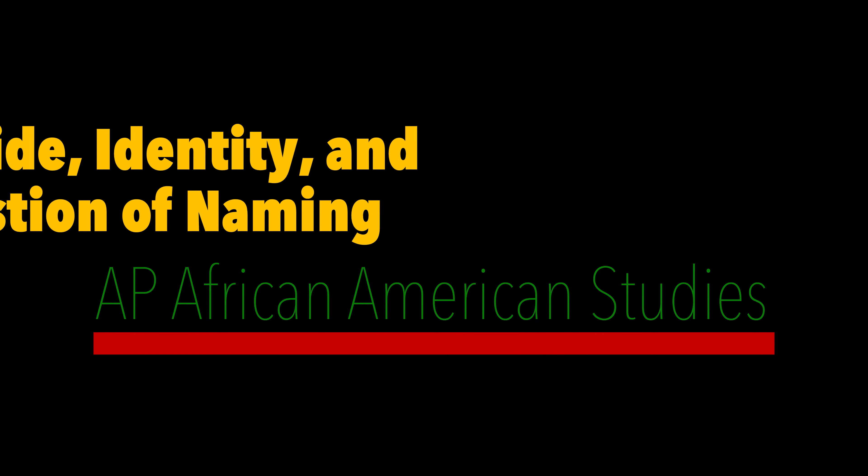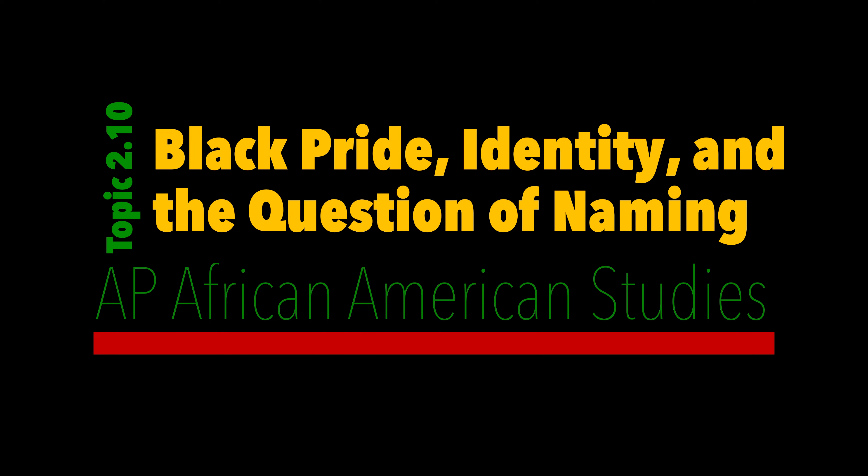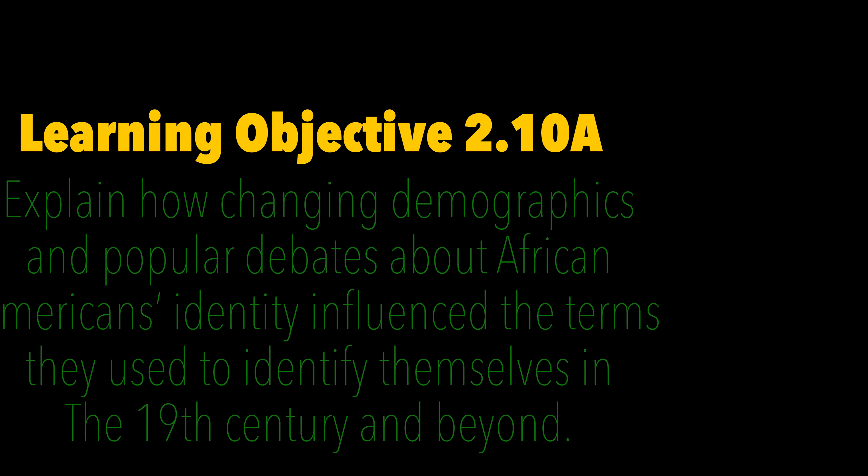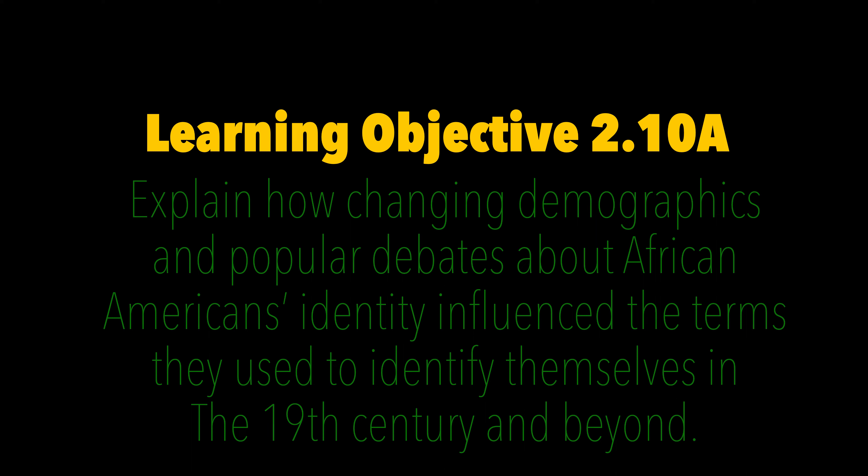Welcome to lecture number 21. This is topic 2.10, Black Pride, Identity, and the Question of Naming. The learning objective is to explain how changing demographics and popular debates about African American identity influenced the terms they used to identify themselves in the 19th century and beyond.